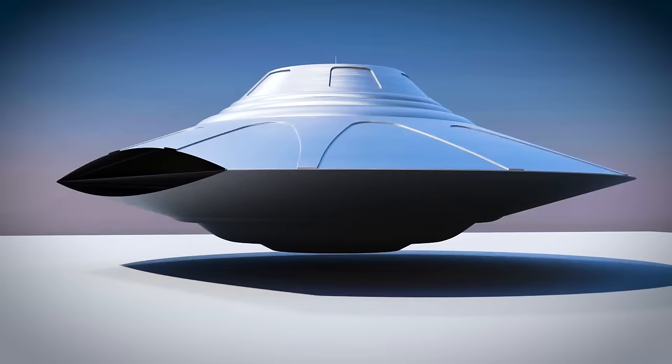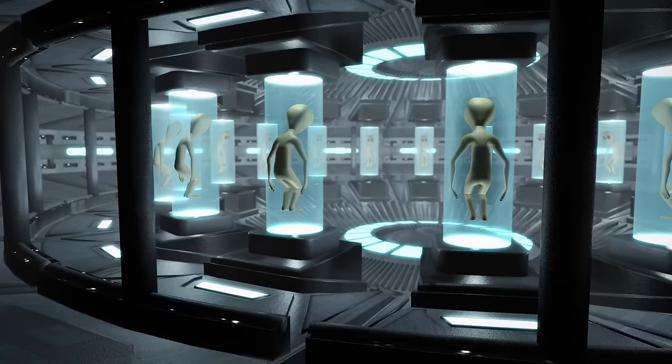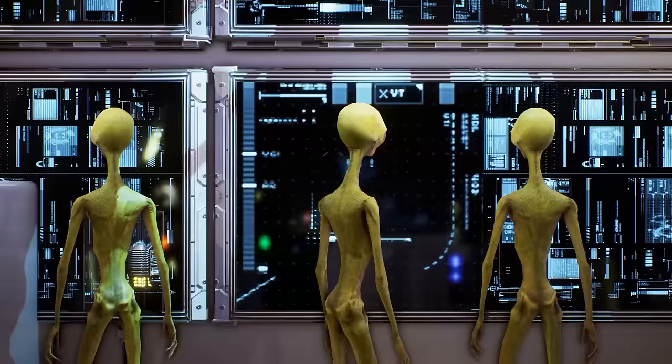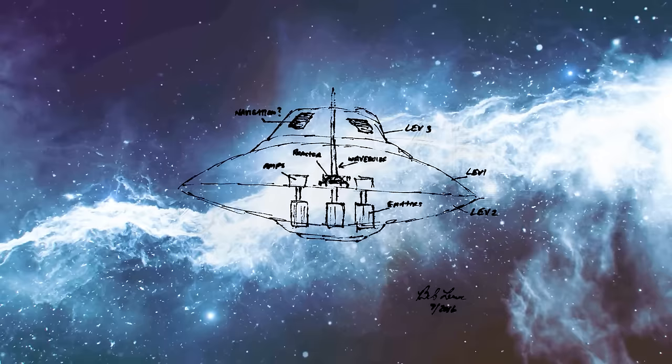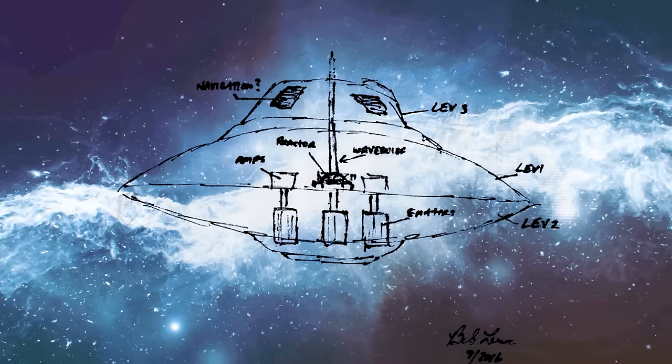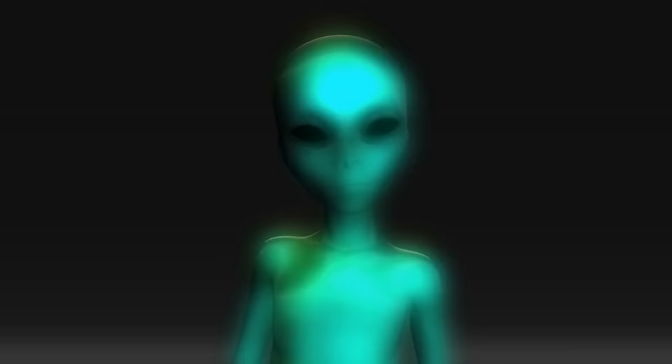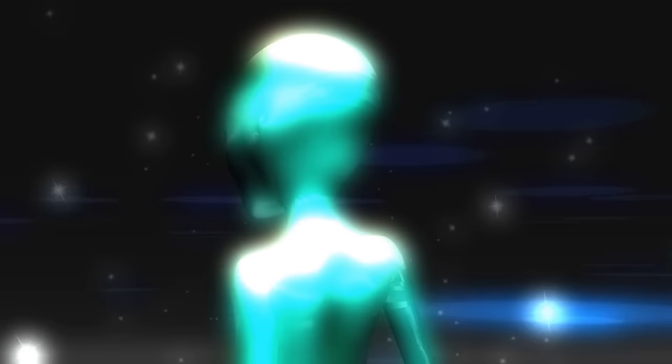Moving up to the middle deck, we find the cruise quarters. Given the UFO's overall dimensions, space here is at a premium, designed for occupants a bit smaller than your average human. This level likely packs in the essentials for life support and day-to-day operations. At the top, the craft features a control hub that sounds like something straight out of a science fiction saga. The navigation and control systems here are said to be unlike anything we're familiar with, possibly incorporating holographic displays or even direct neural connections for piloting the craft.